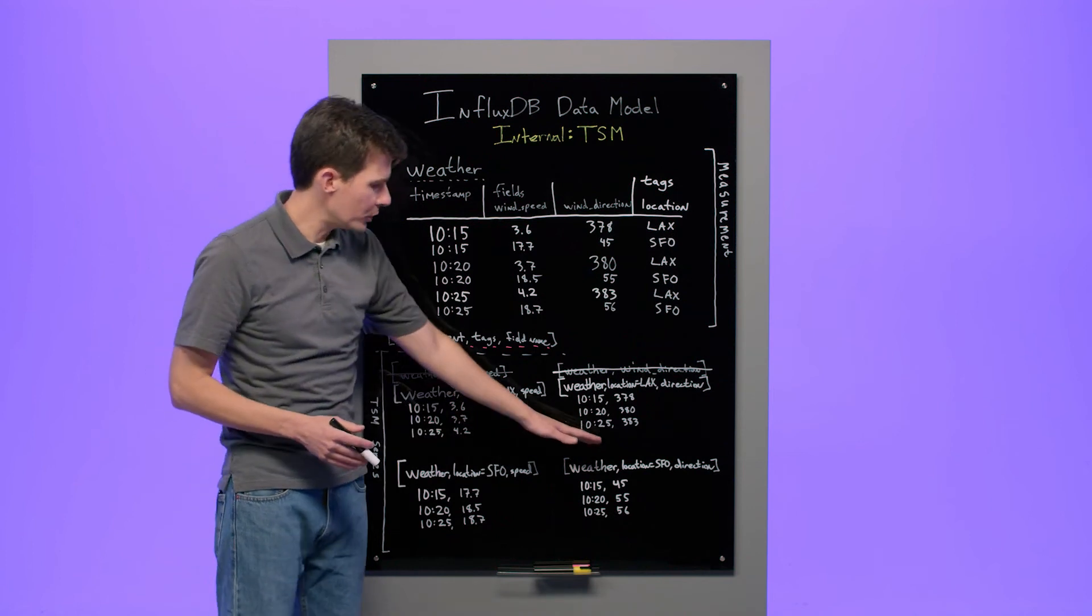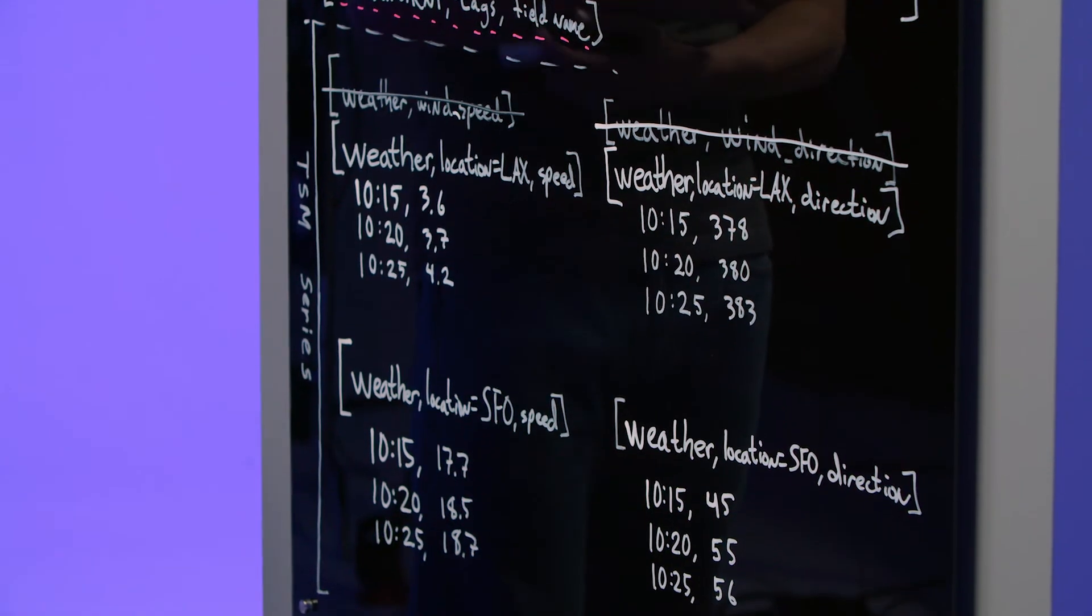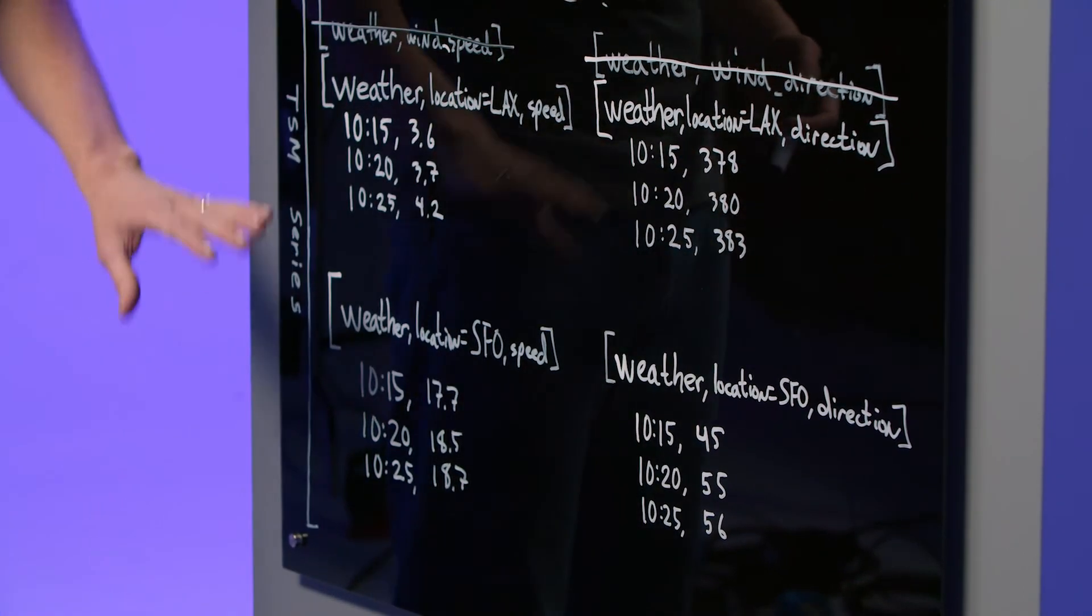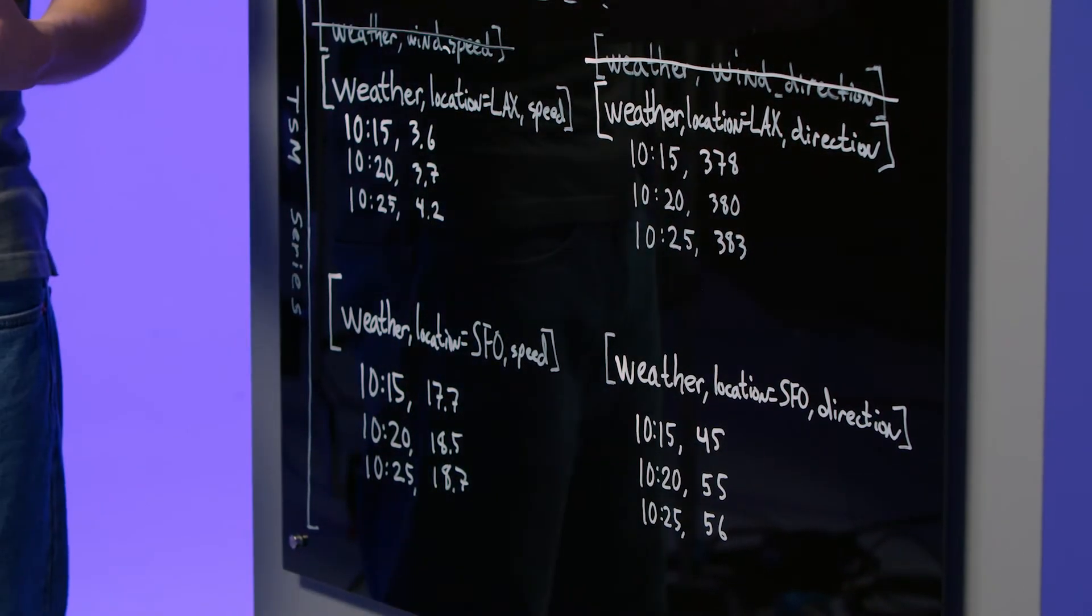These two new series keys, weather location SFO and speed, weather location SFO and direction are data that come from our new weather station.